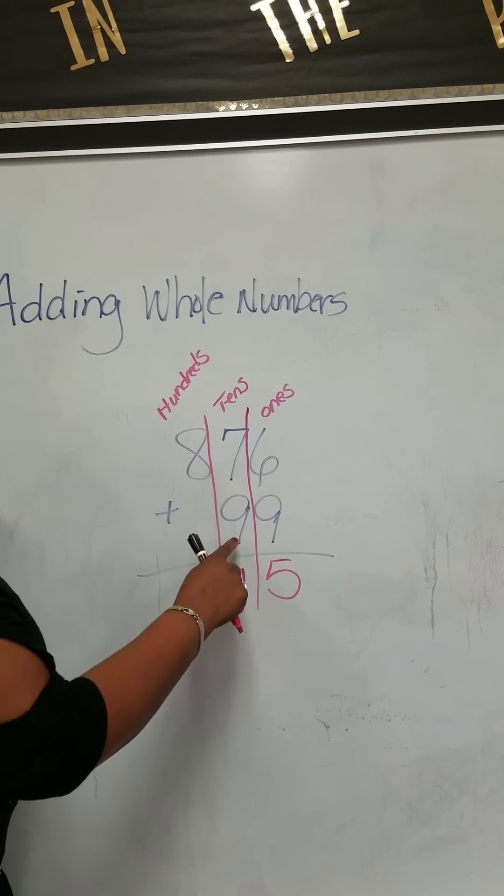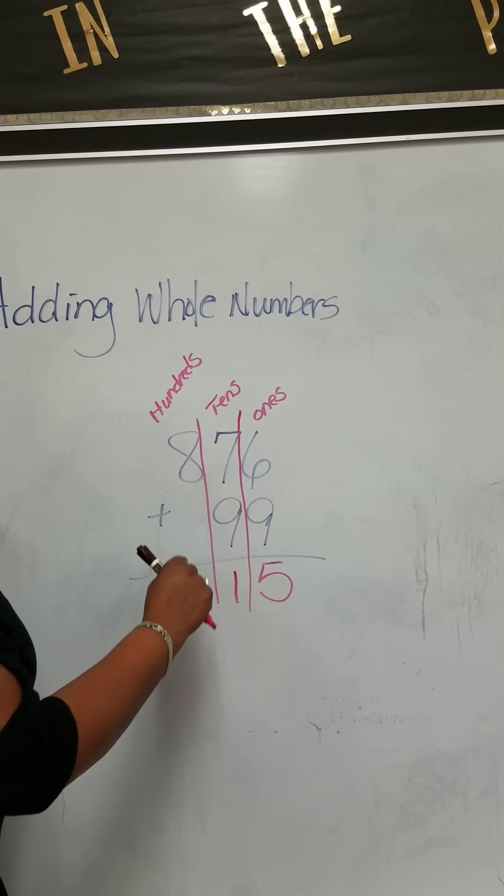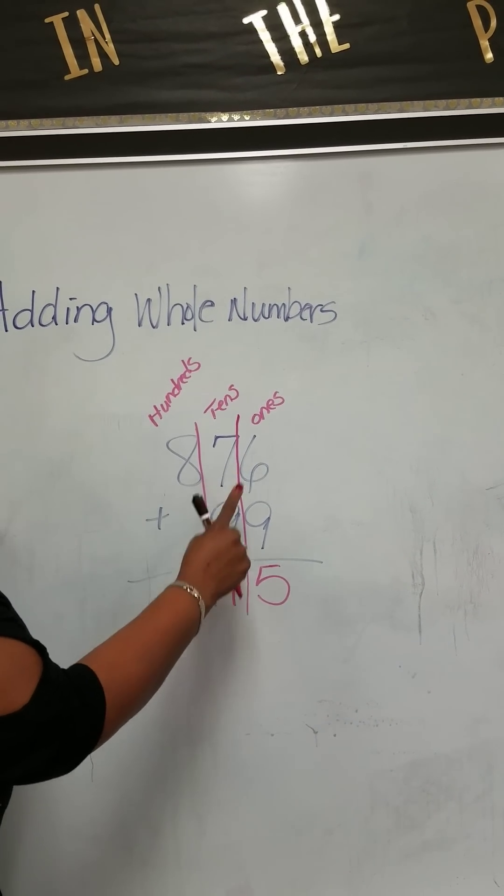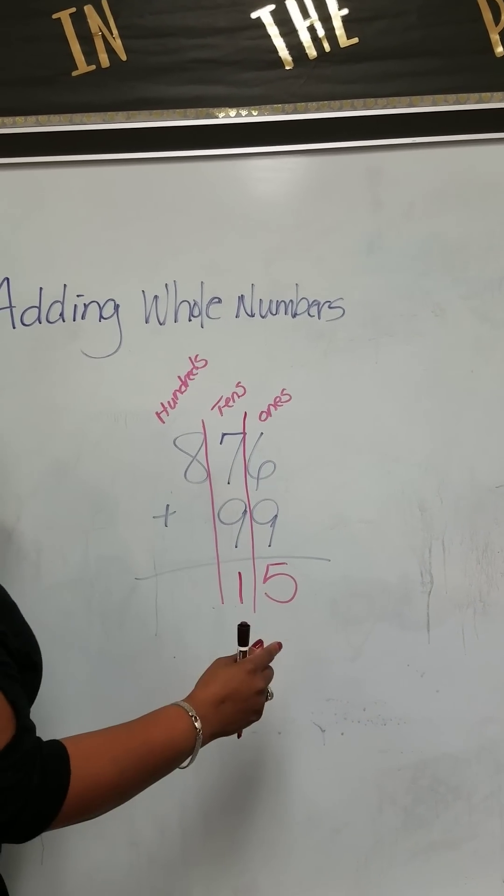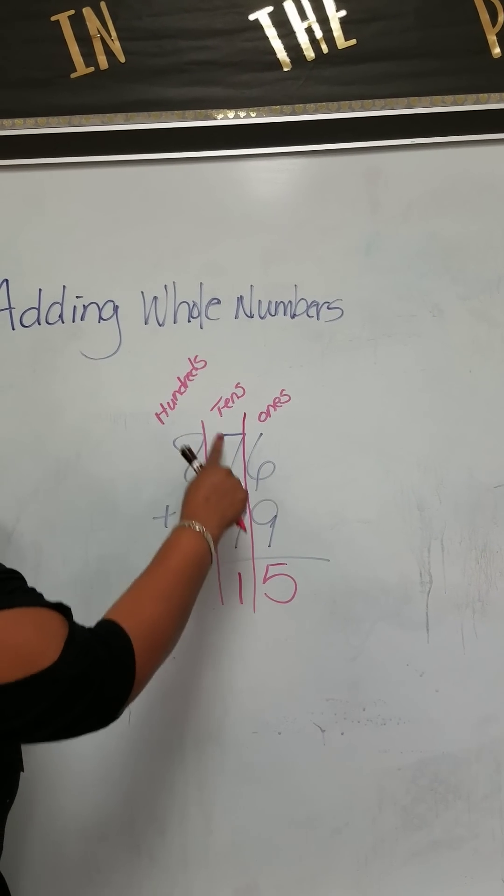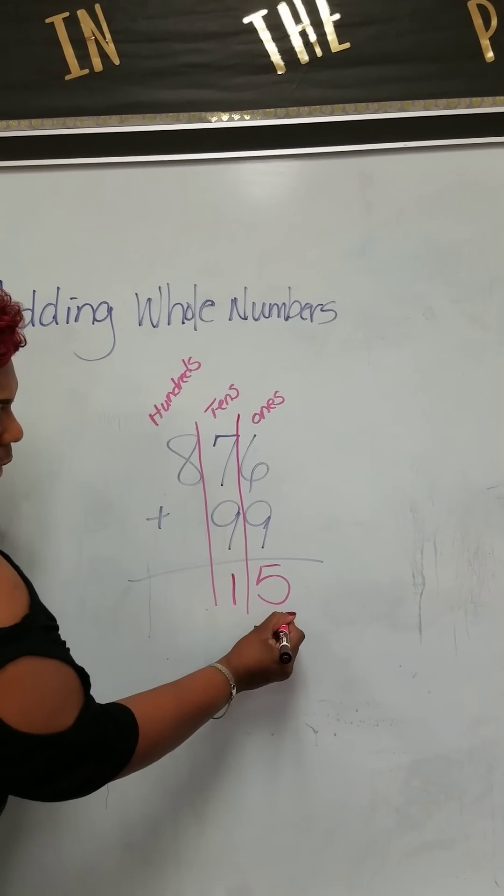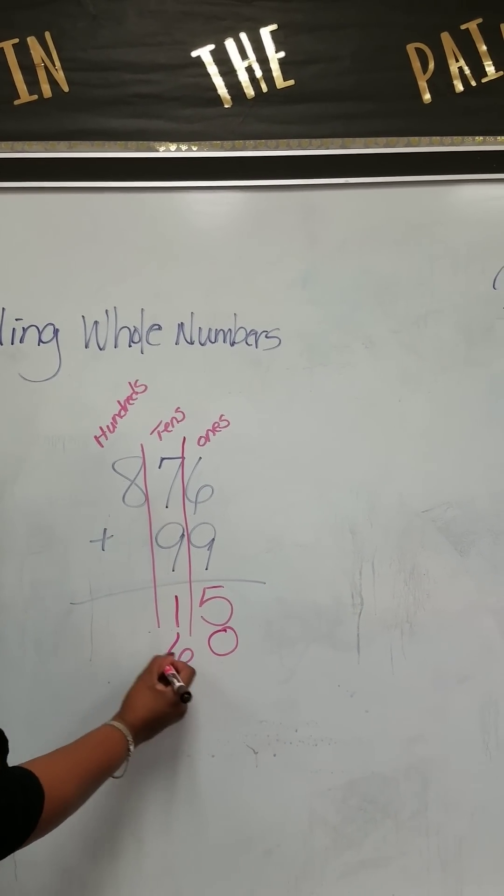Here we're in the tens column. And remember tens have a zero at the end. So we have nine plus seven, which is 16. But we're in the tens column and we have to put that zero on the end.